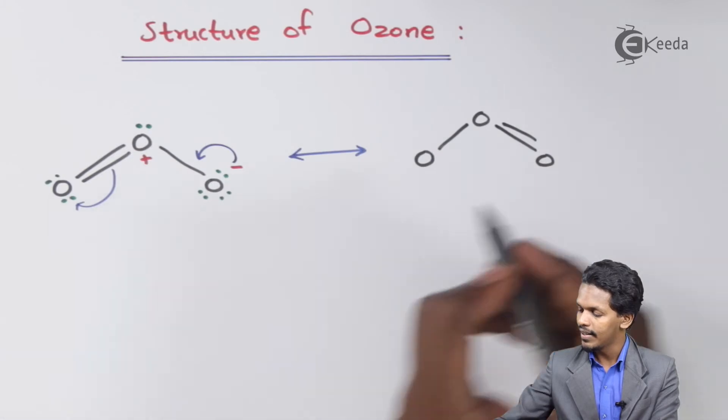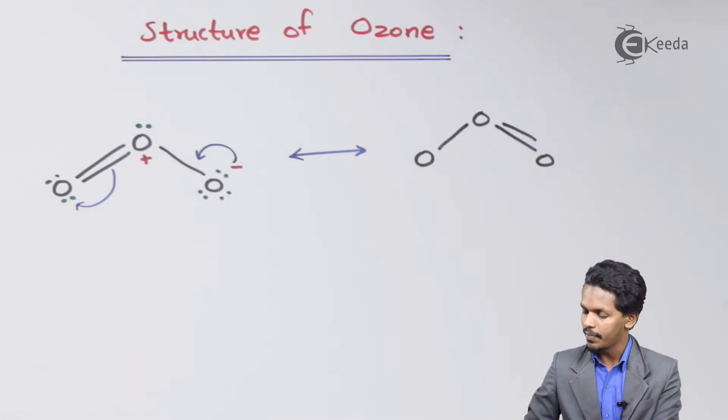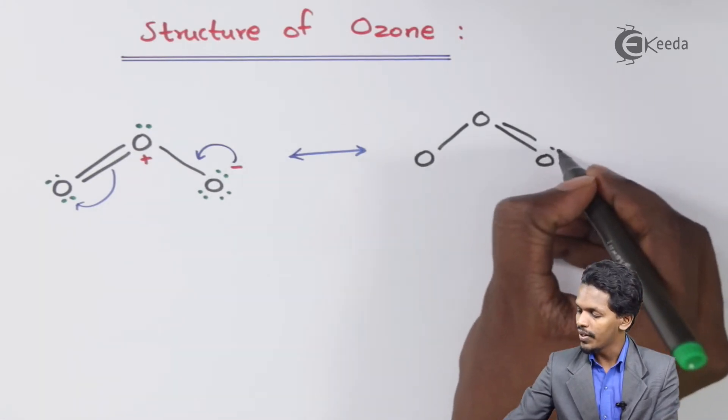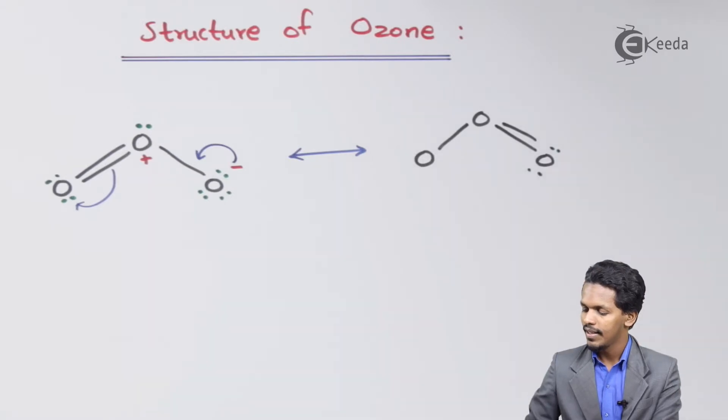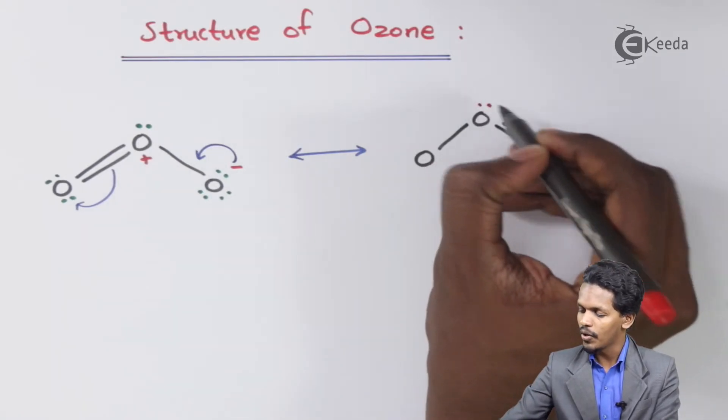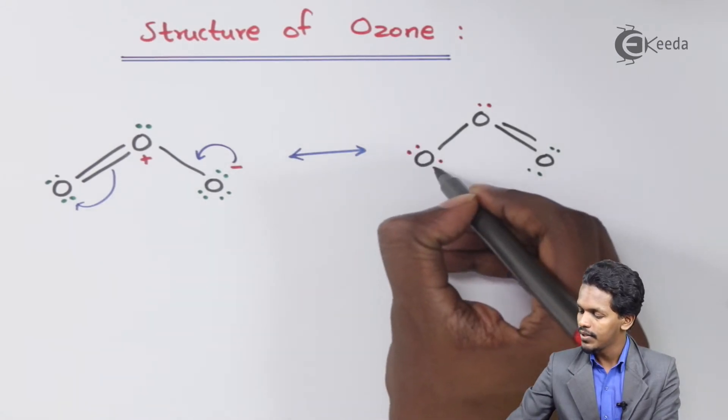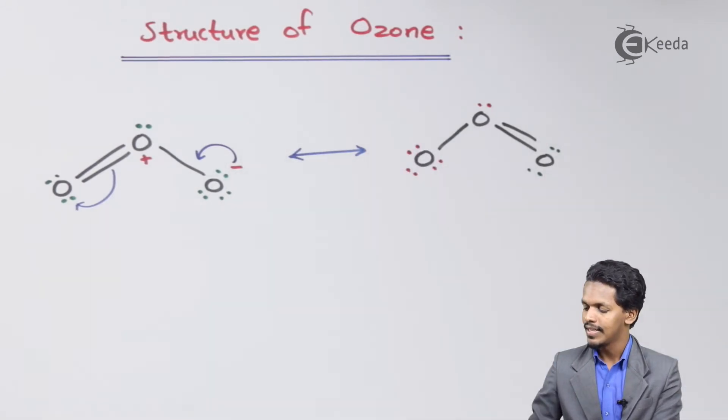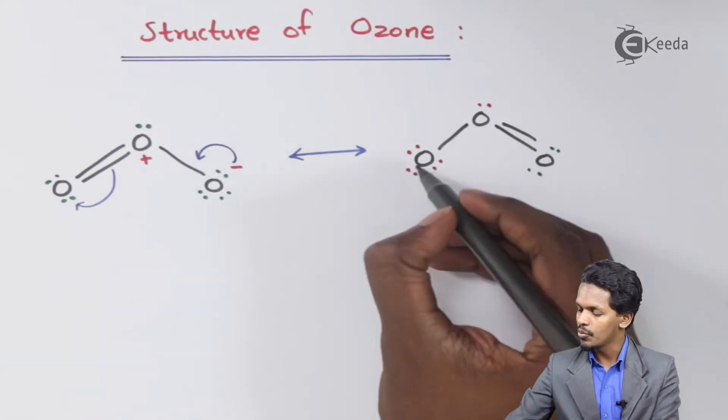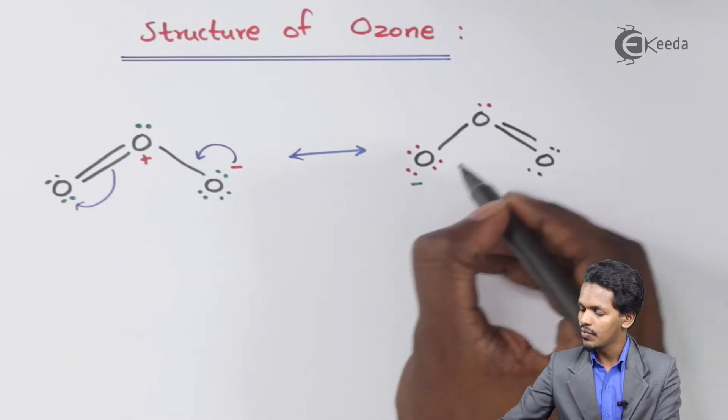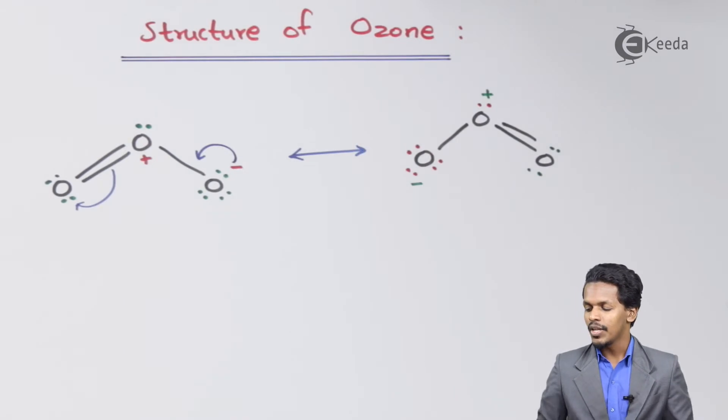There will be double bond over here and there will be, basically, I am writing over here as two lone pair of electrons. Here it will be as it is, again one lone pair of electron, while here it will be one, two, three, four, five, six, six electrons, making this to be having a negative charge, while this one will be a positive charge.